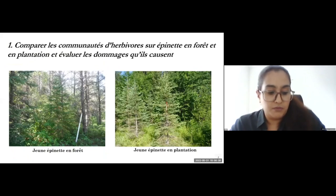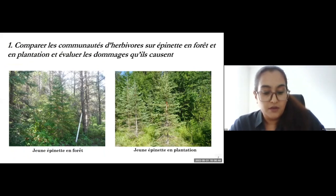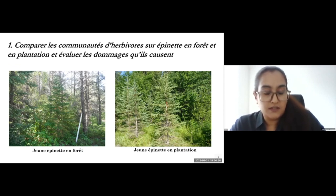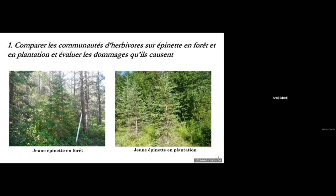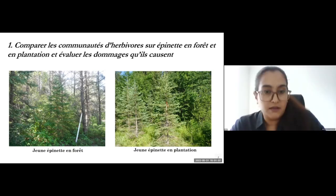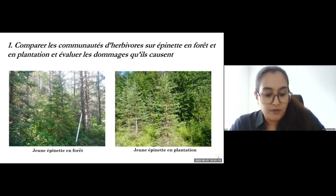For the first objective, we wanted to compare the herbivore communities in white spruce between the plantation and naturally regenerated forests, and to compare the damage caused by herbivore communities in these two habitat types. As you can see in the figures, on the left is a young spruce tree in the forest habitat and on the right is a young spruce tree in the plantation habitat. We compared the two habitat types in terms of canopy openness, light intensity, and stand structure. The two habitats were also compared for predation pressure by sampling herbivores and predatory insects.